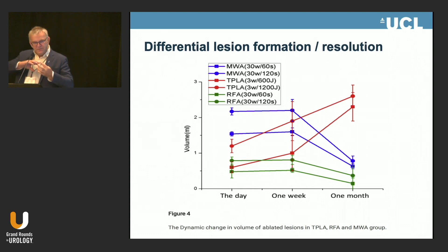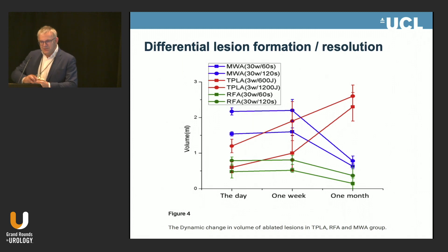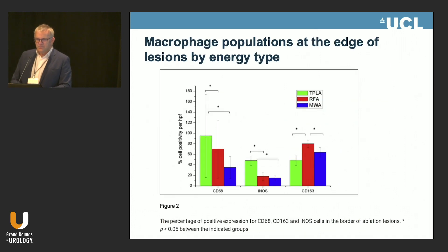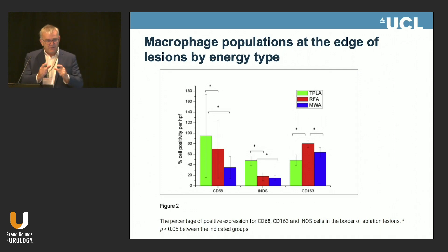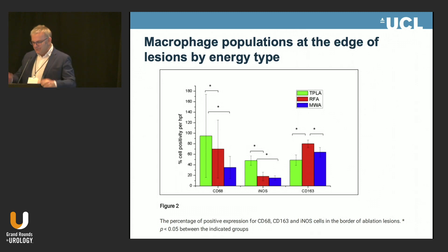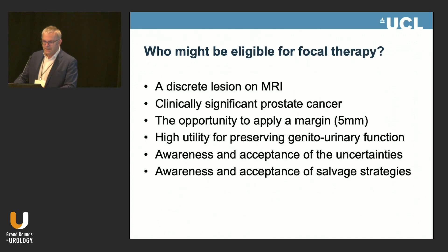The study shows lesion propagation over time at one day, one week, and one month. Laser ablation lesions grew bigger over time while the others cicatrized and shrank. Laser in green, RFA in red, microwave in blue — different sub-populations of macrophages around the lesion edge. So it might matter — probably does matter — how you kill the tissue, and the energy used results in different effects in surrounding tissue.